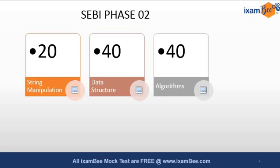The first category is 10-marker questions, the second is 30-marker questions, and the third is 40-marker questions. The level of difficulty will be easy for the 10 markers and will increase up to the 40 markers. This is how each particular portion is distributed in Paper 2.